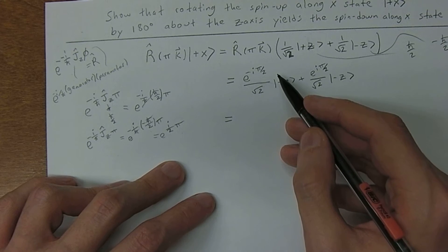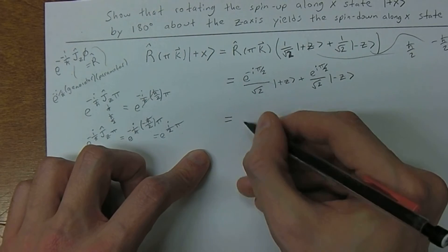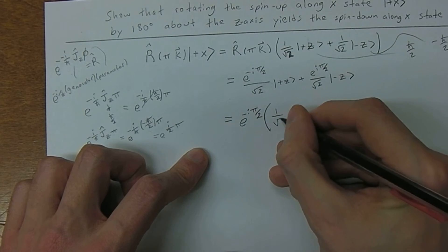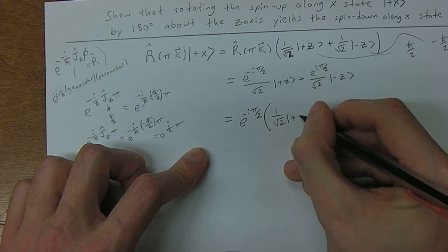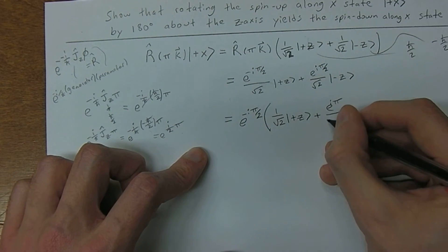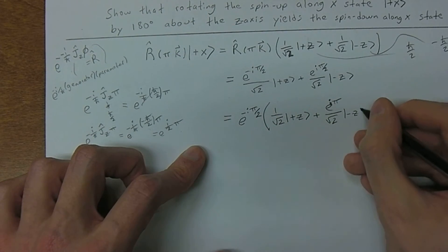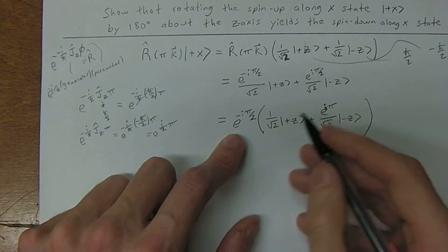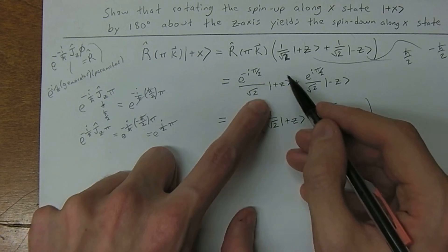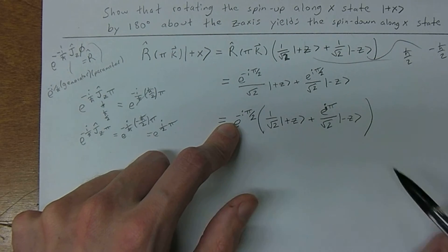Now we want to get our overall phase, so we factor out e to the negative i pi over 2 from the expression. This leaves 1 over square root of 2 times plus-z, plus e to the i pi over square root of 2 times minus-z. When you pull out negative i pi over 2 from the second term, that just gives you e to the i pi.